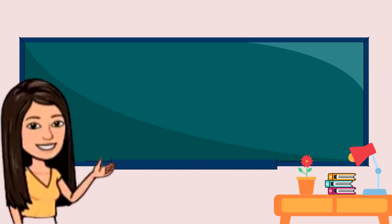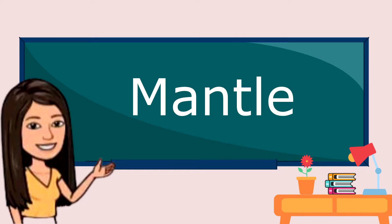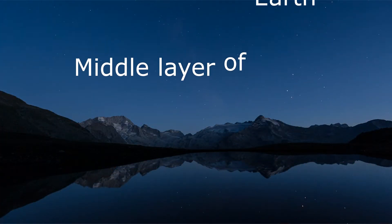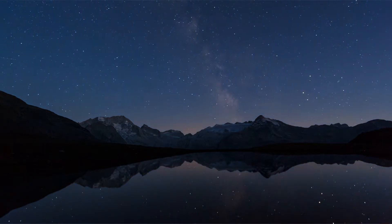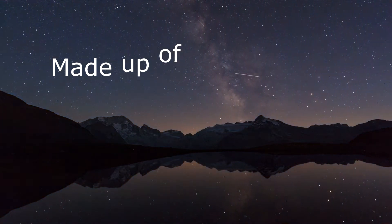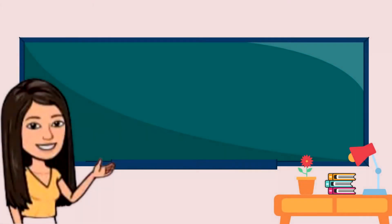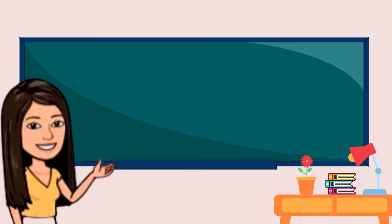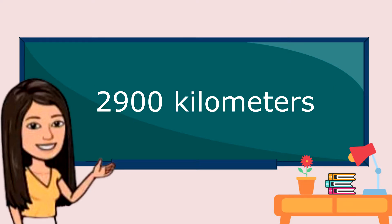The next layer of the Earth is the mantle. The mantle is the middle layer of the Earth. It is made up of silicate rocks. It is mostly made of elements such as magnesium, silicon, iron, and oxygen. It extends to about 2,900 kilometers from the surface of the Earth.